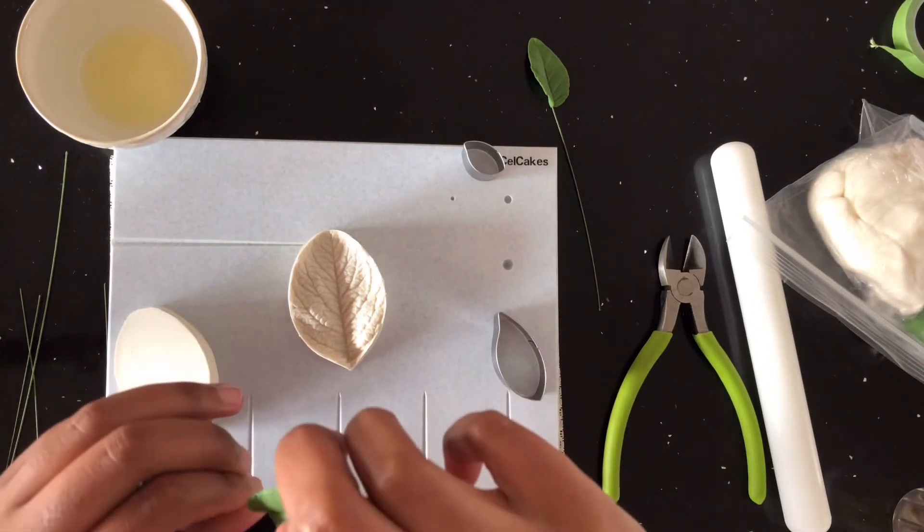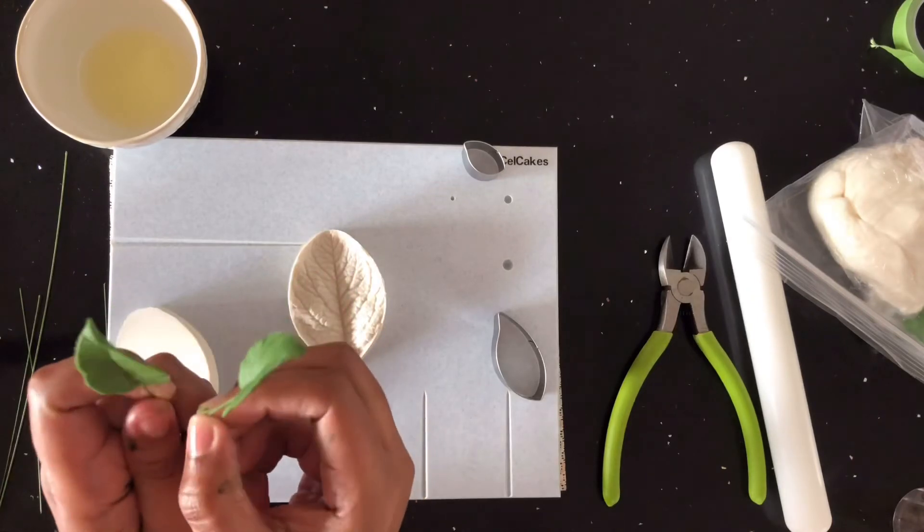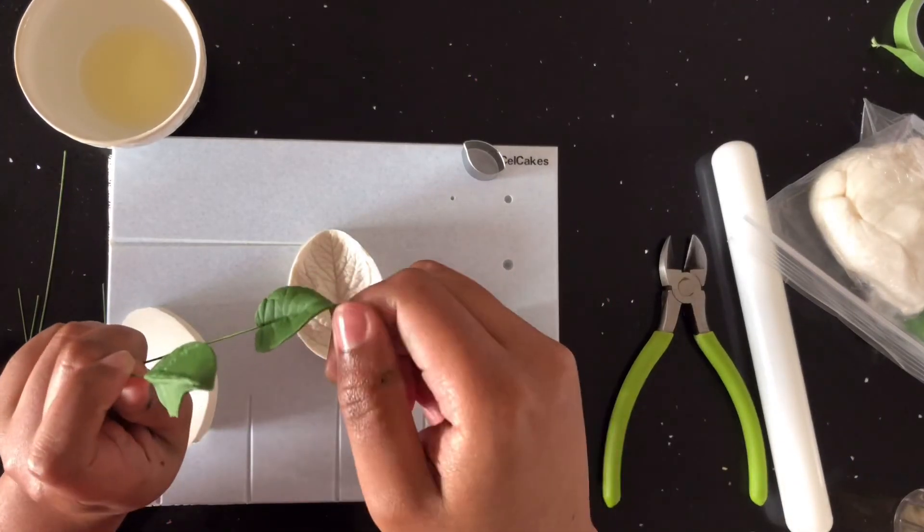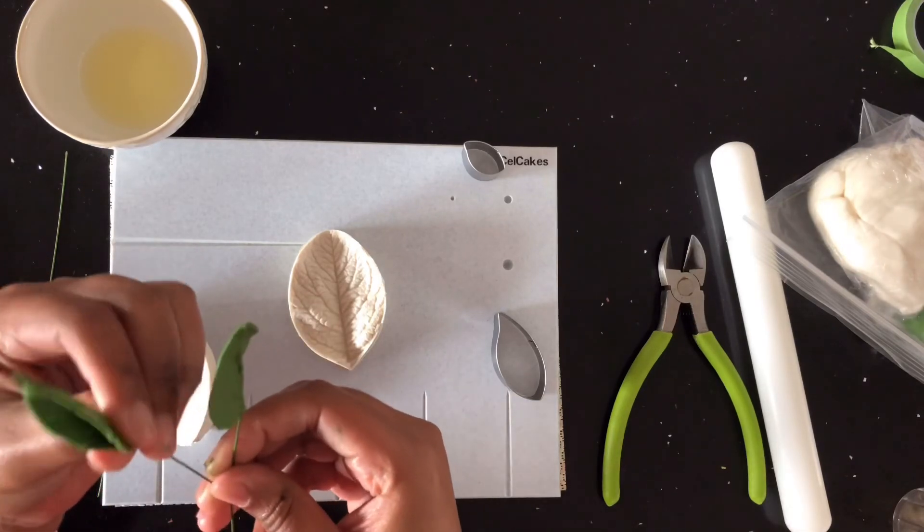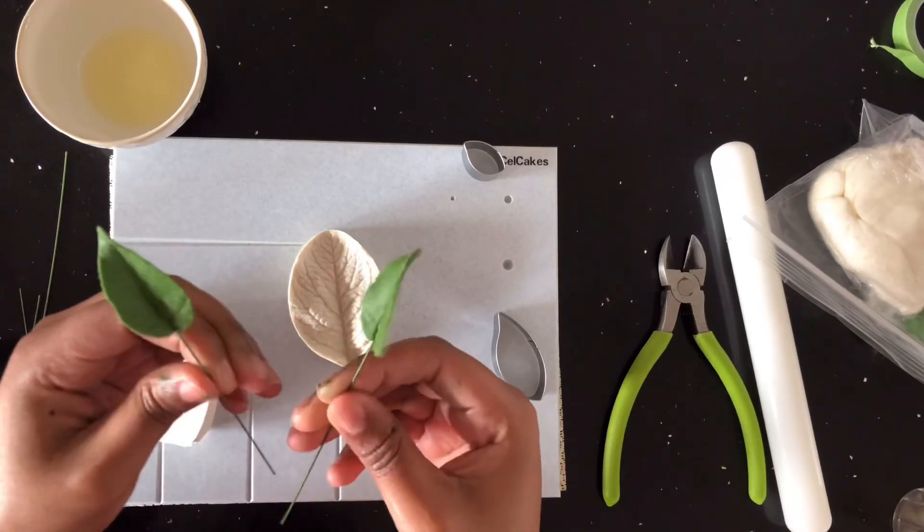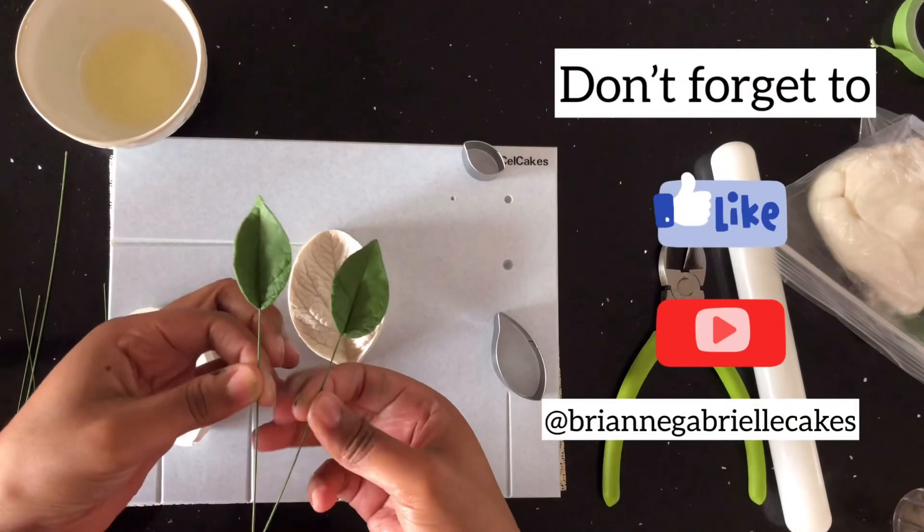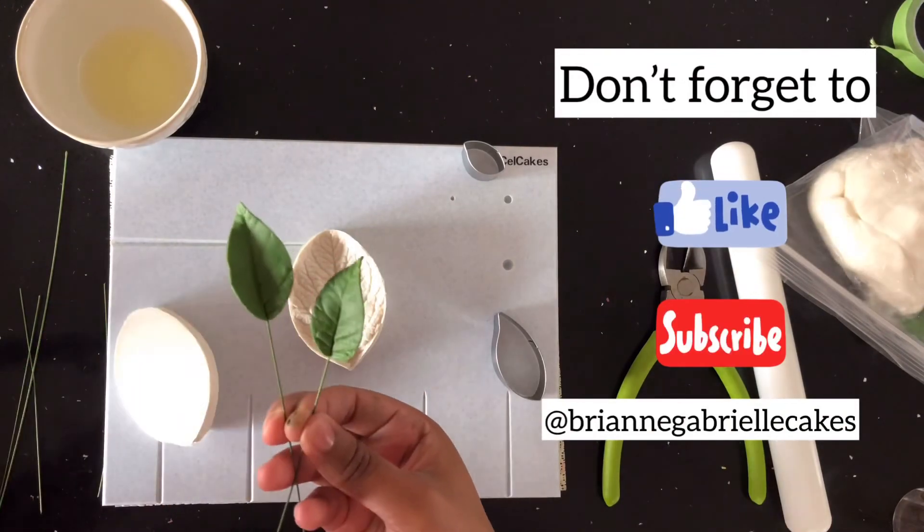Then you're going to pinch the base, and I like to twist the top or the sides to create movement so that I have an assortment of different shapes and sizes of leaves for when I'm working. And then I hang these guys to dry for 24 hours before I go ahead and dust them.